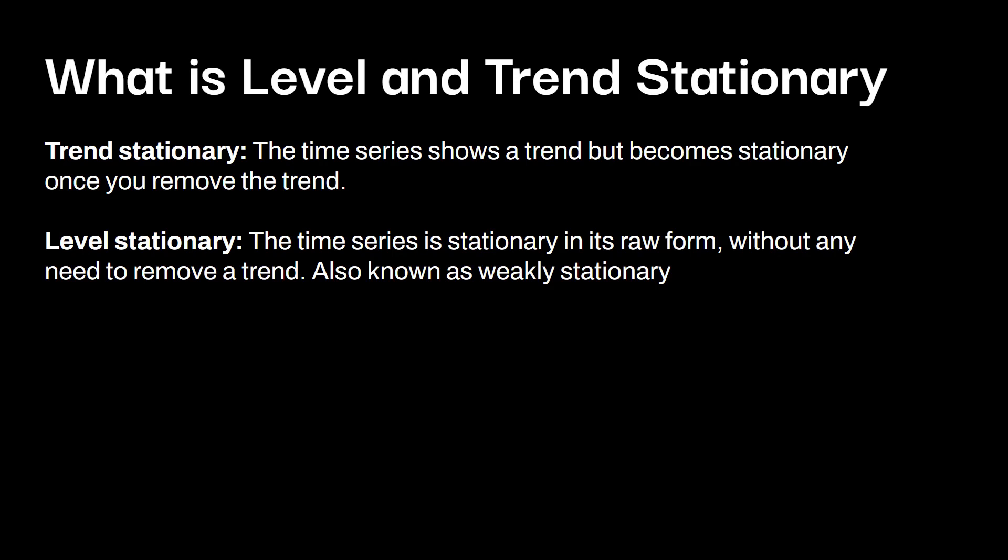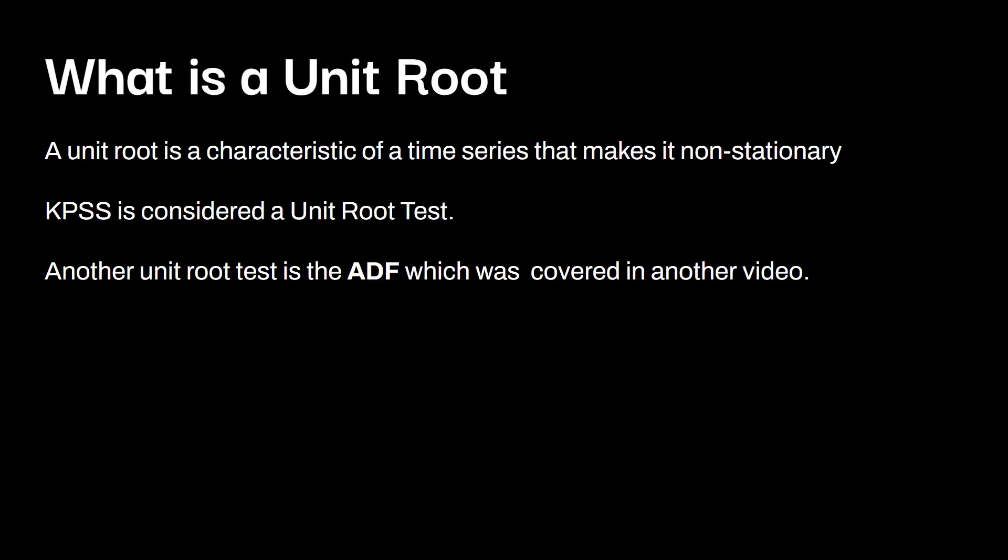So what exactly are level and trend stationary? Trend stationary means the time series shows a trend but becomes stationary once you remove the trend. Level stationary means the time series is stationary in its raw form without any need to remove a trend — this is often also called weakly stationary. A unit root is a characteristic of a time series that makes it non-stationary. KPSS is considered a unit root test, as is the ADF test.